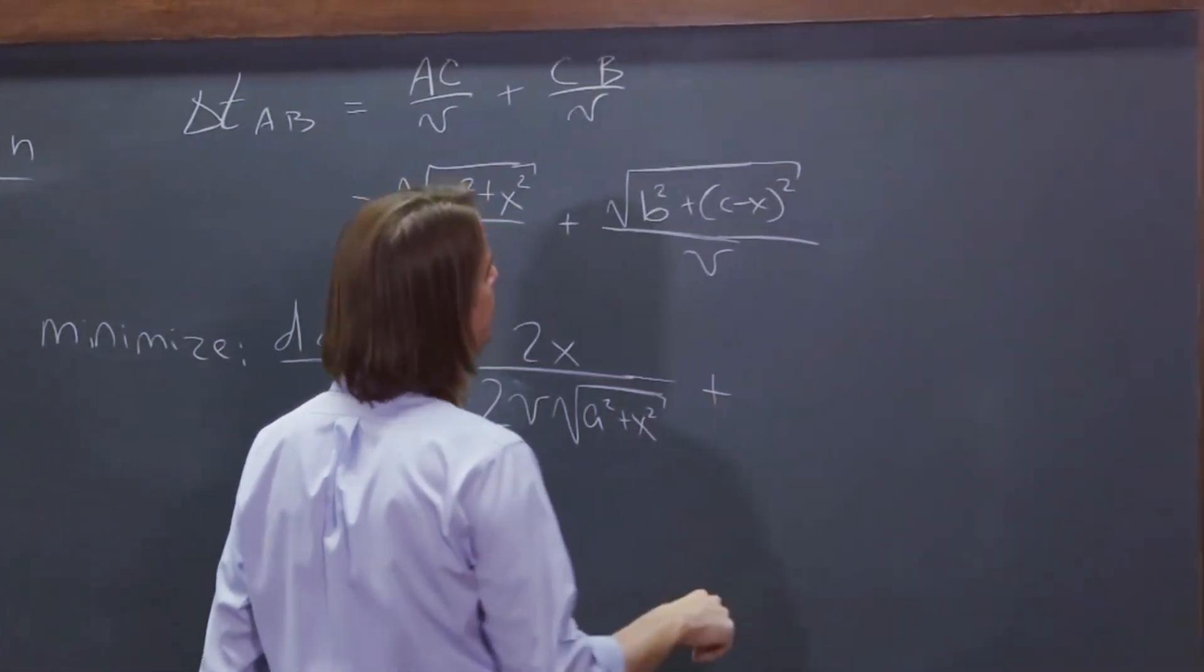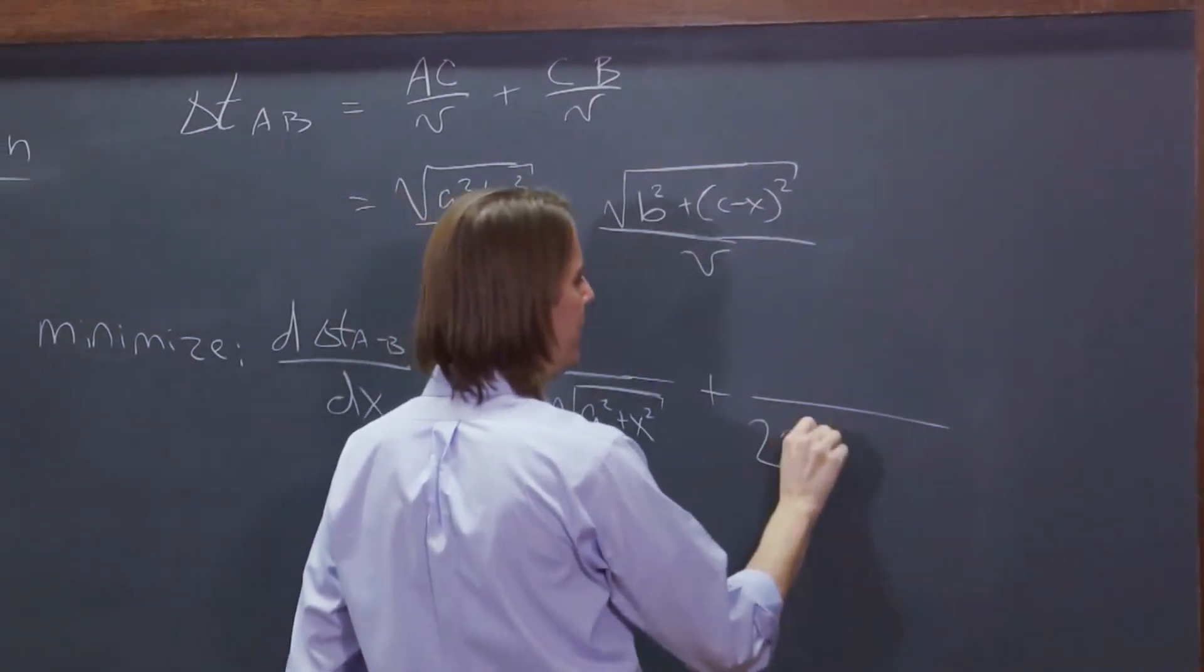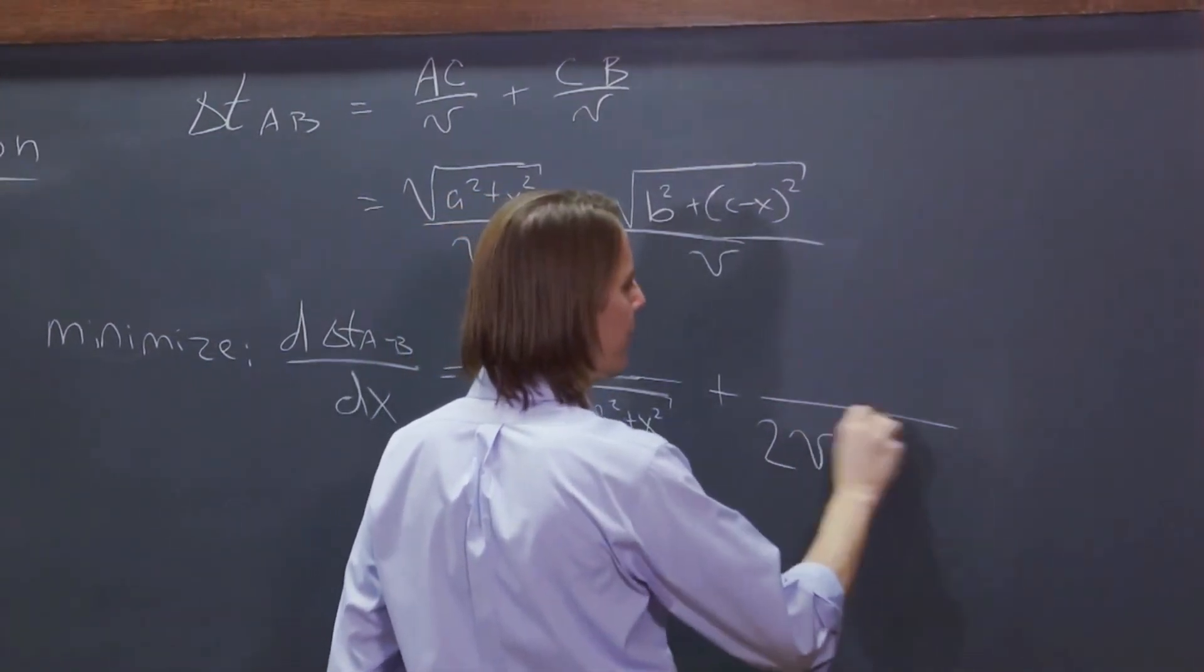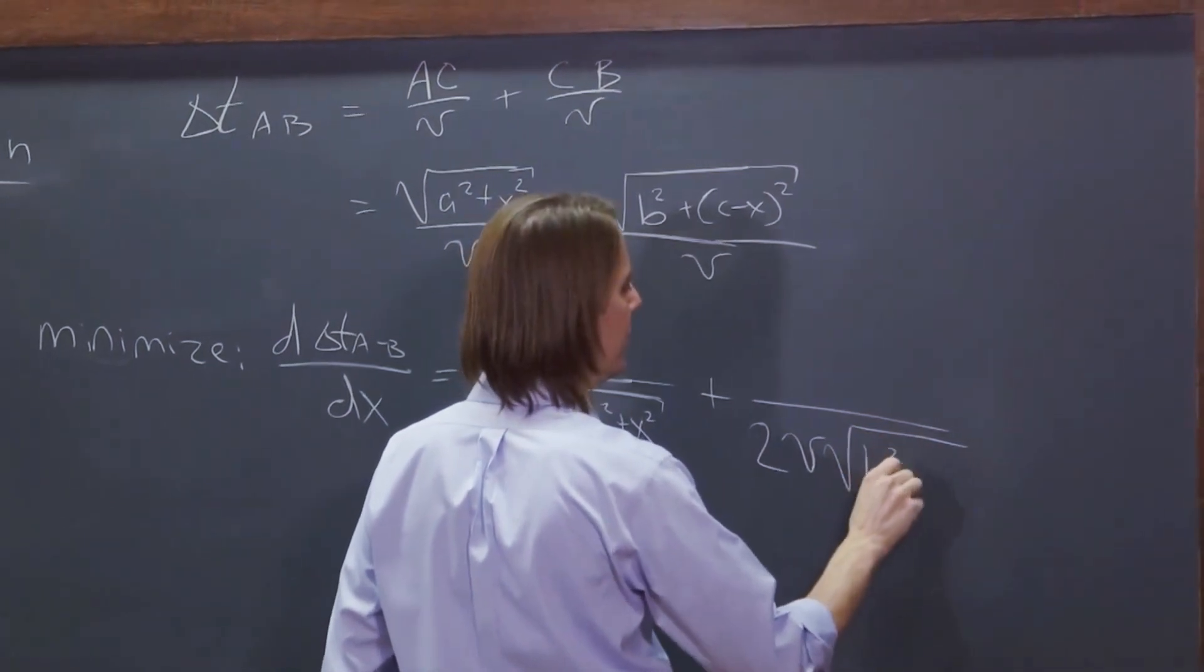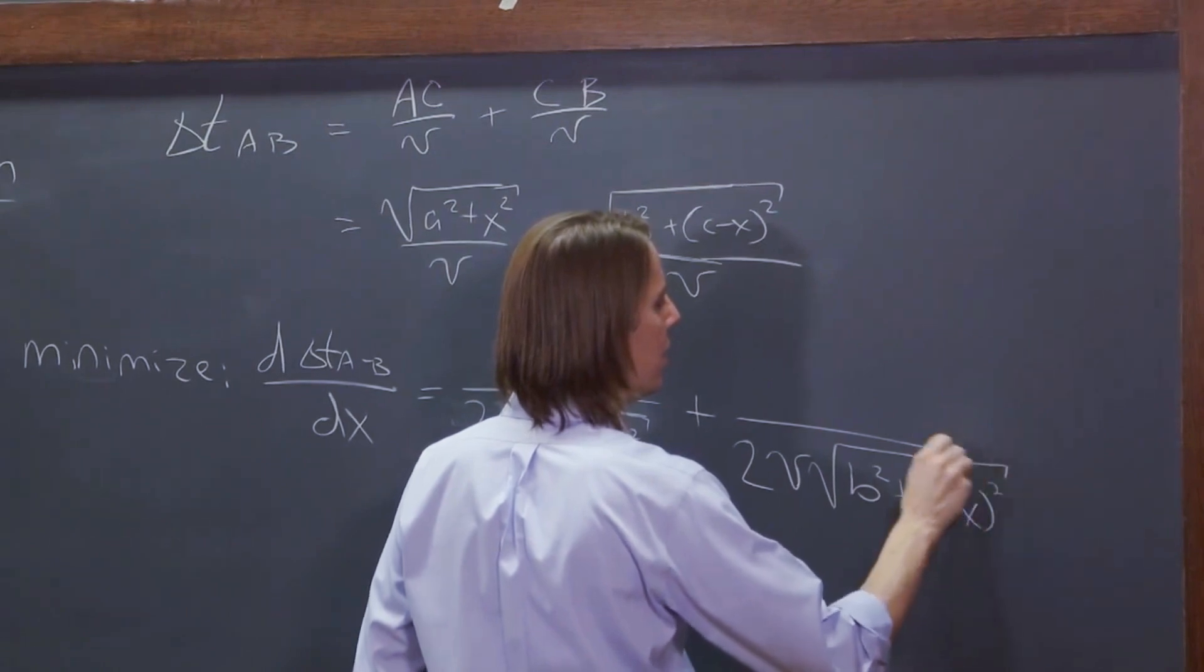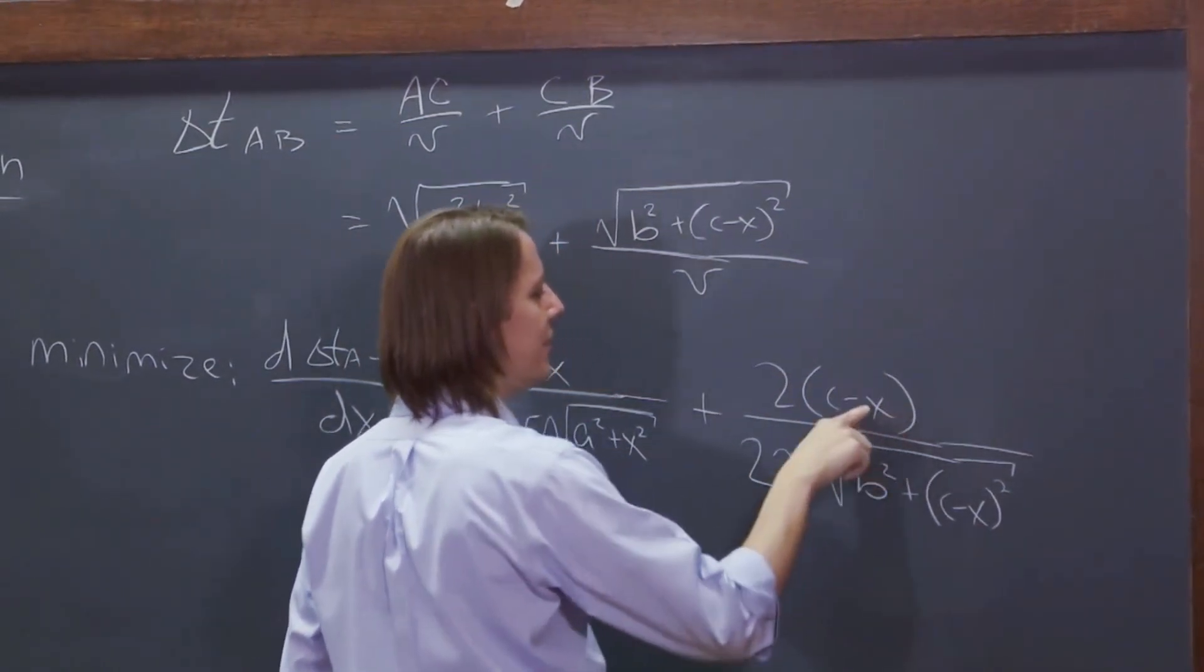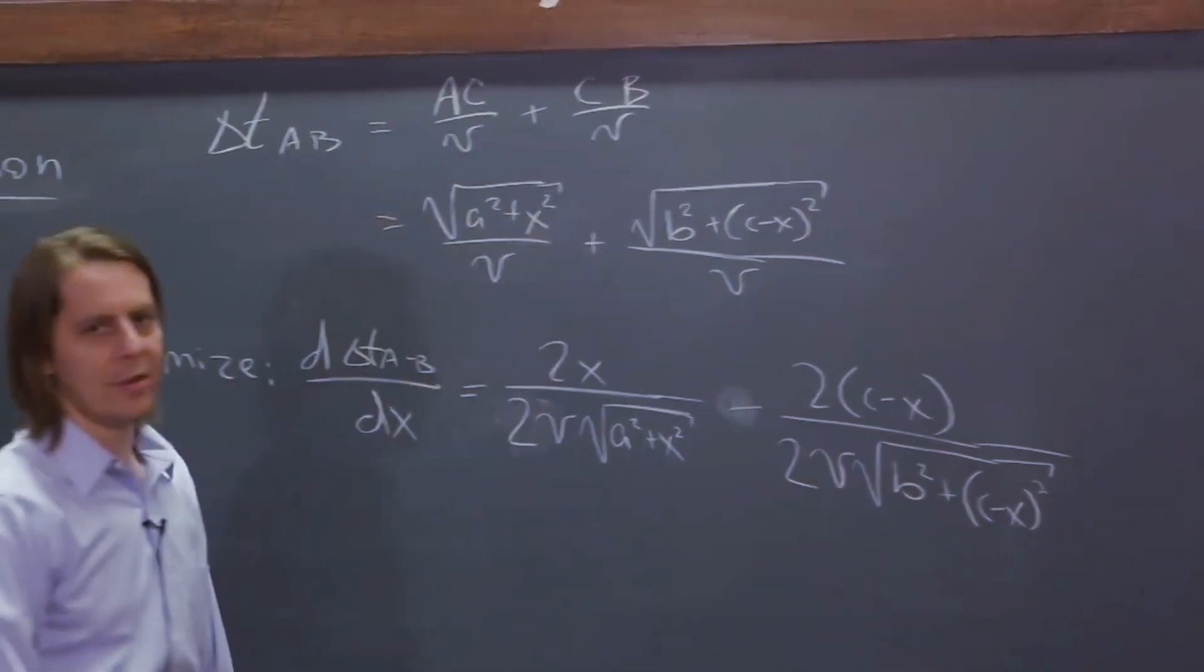And this one, we also have a 2 because it's a 1 half in the derivative, and we have our V down here, and it goes to the minus 1 half, which is like putting it in the square root at the bottom, plus C minus X squared like that. And the top, we put the derivative, C minus X, and then finally the derivative of this gives us a negative sign. It's all exactly the same.